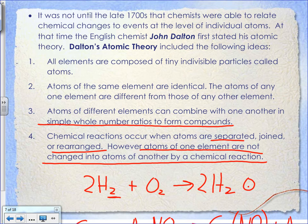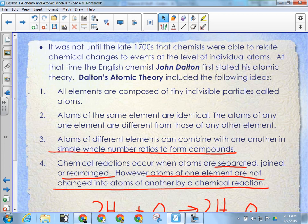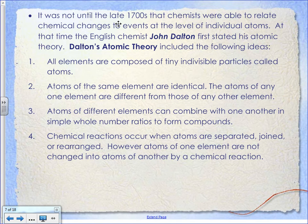In the late 1700s, after Lavoisier and Bacon got the scientific method going and people were doing experiments, a guy named John Dalton noticed that during chemical reactions certain patterns always appeared. Based on those patterns, he resurrected Democritus's idea that all matter is made of tiny particles, because it was the only idea that could explain what was going on. He came up with the atomic theory - four points you should most definitely know.